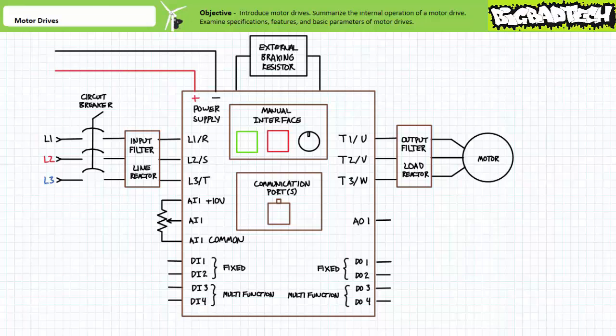In conclusion, this lecture took a brief look at motor drives — a power electronics device that varies the speed and torque of a motor under its direction by varying the supplied voltage magnitude and frequency. We reviewed those properties that influence synchronous speed, examined antiquated methods of speed control, discussed rectification, inversion, and filtration. Additionally, we examined common motor drive specifications and parameter programming, and we examined a general block diagram of a motor drive including fixed and multipurpose analog and digital inputs and outputs.